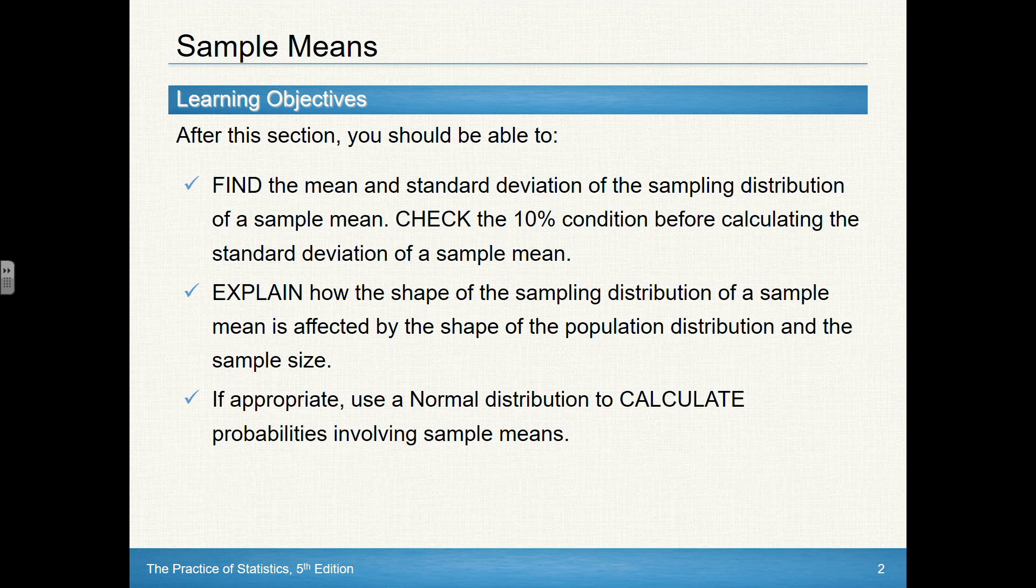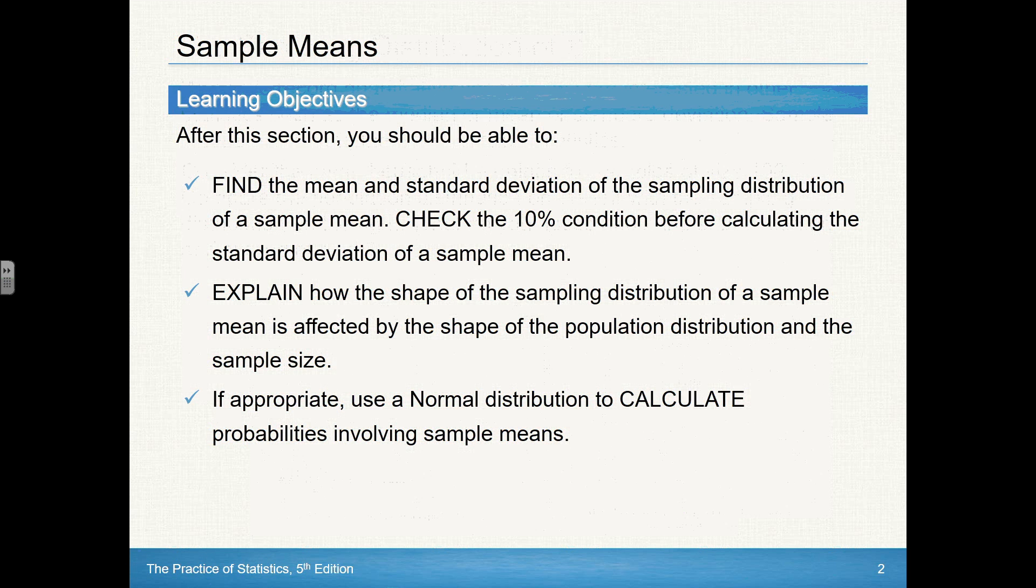Now, our objectives: we're going to find the mean and standard deviation for a sampling distribution of the sample mean, checking that 10% condition. We're going to explain how the shape of the sampling distribution of the sample mean is affected by the shape of the population distribution and the sample size. And if we meet the conditions, then we're going to use the normal distribution to calculate probabilities involving sample means.